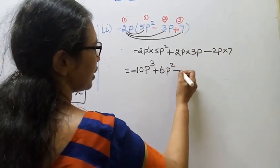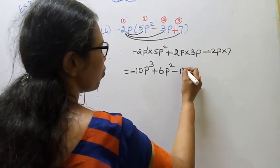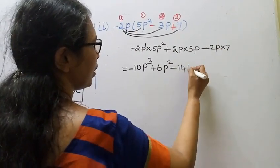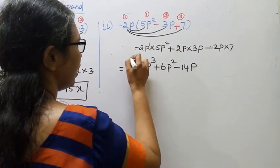This is minus. 2 times 7 is 14p. This is the sum in the answer.